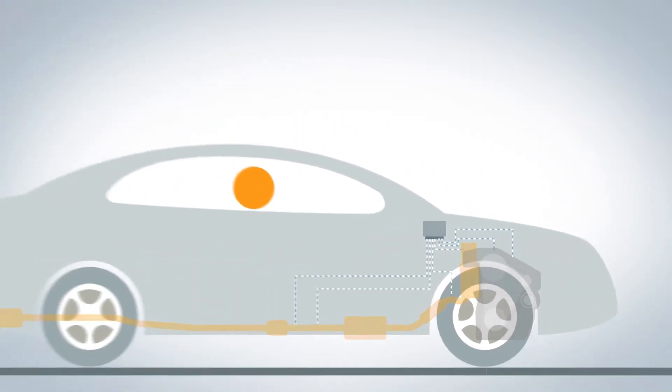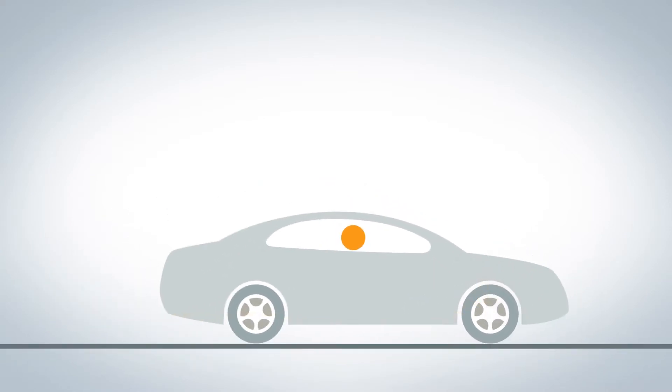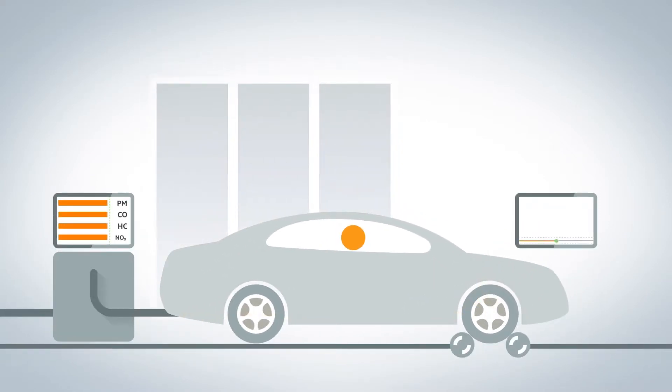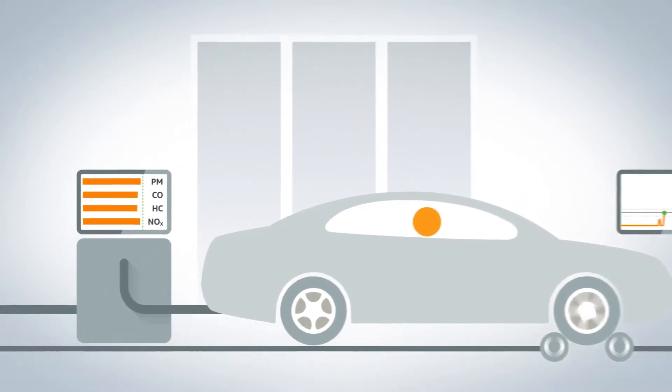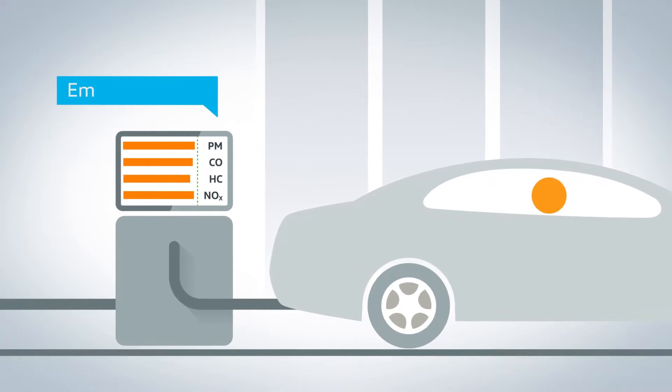Up until September 2017, testing on the test bench was the only way to determine whether a vehicle fulfilled the legal requirements. Here, the vehicle runs with a defined speed curve while the exhaust gas values are being measured.